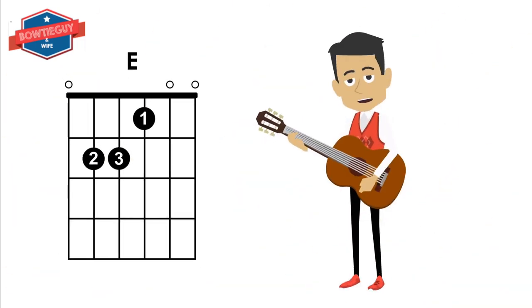Now the E chord, you use all the strings on the guitar. You need to put your middle finger on the second fret of the A string. Take your ring finger and put it on the D string of the second fret. And your pointer finger is going to go on the G string of the first fret. Give it a whirl.